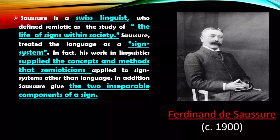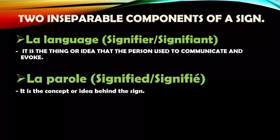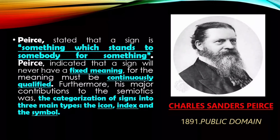To sum up, without people there will be no sign, and without signs people in society will not establish their deep consciousness. According to Saussure, the relation of signifier and signified is arbitrary — meaning there is no real connection between the word used to describe something and the thing actually being described. For example, 'table' in English and 'una mesa' in Spanish. La langue is the signifier — the thing or idea that people use to communicate — while la parole is the signified, the concept or idea behind the sign.